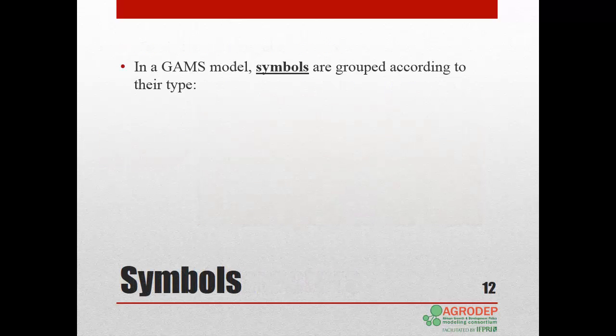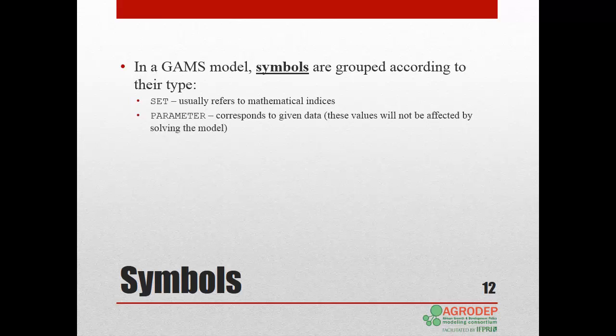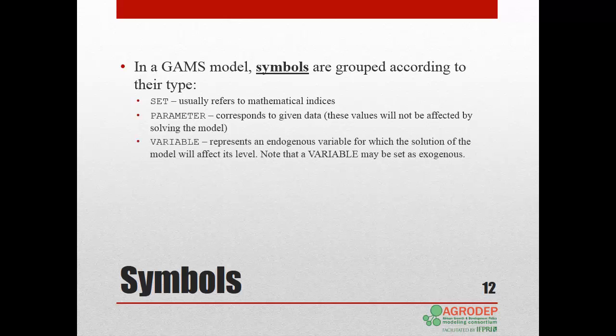In a GAMS model, symbols are grouped according to their type. Set usually refers to mathematical indices. Parameter corresponds to given data whose values are not affected by solving the model. Variable corresponds to endogenous values that are affected by the solution of the model. Note that a variable can be set as exogenous. We will cover this feature later in the training. Equations describes the relationship between different variables and parameters. Finally, model is a set of equations to be solved.